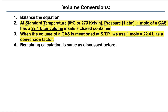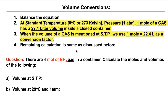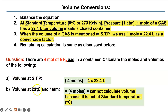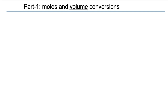If there are four moles of NH3 ammonia gas, the volume at STP would be four times 22.4 liters. However, you cannot calculate volume at 29 centigrade and 180 atm because that is not standard temperature or pressure. Some problems will give you the wrong temperature or pressure — in those cases you simply cannot use this method.